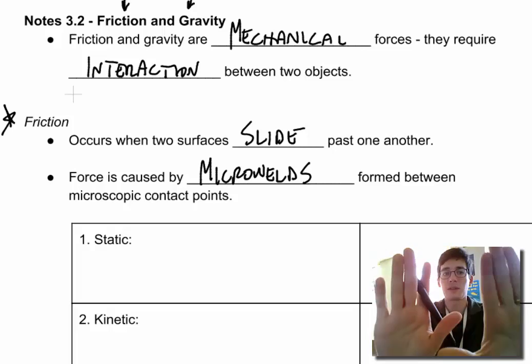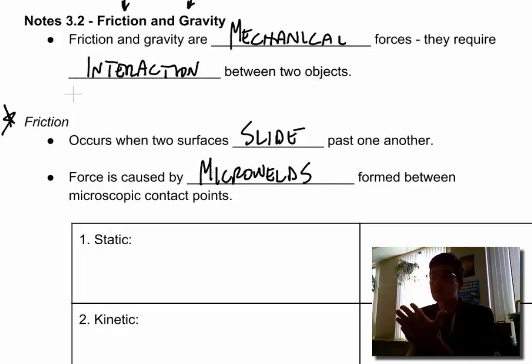And on your hands you've got little grooves and bumps. Your fingerprints, they stick past each other. That's what helps us hang on to smooth objects really. We're forming these little micro welds.